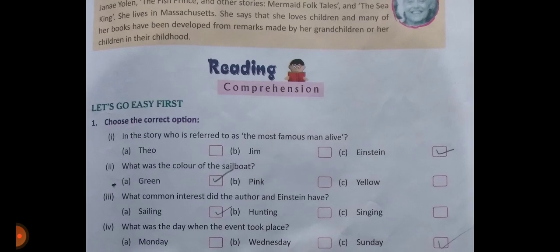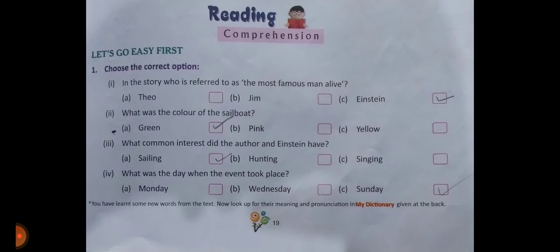That is the MCQ part on page number 19. Students, page number 19 — that is the MCQ part. There are 4 questions. First, the answer is Einstein. Second, the answer is option B. Third, that is also option B. And the fourth question, the option is C. So the answers are: A, B, B, C.